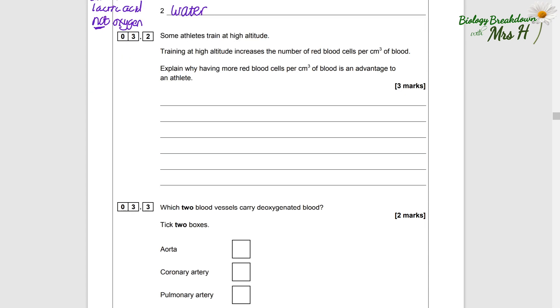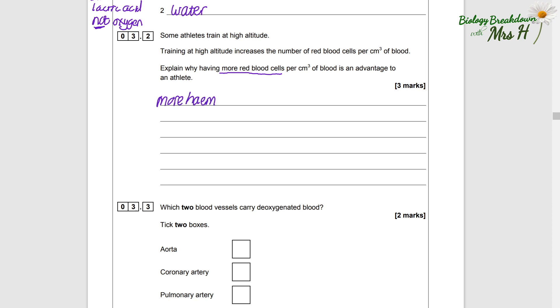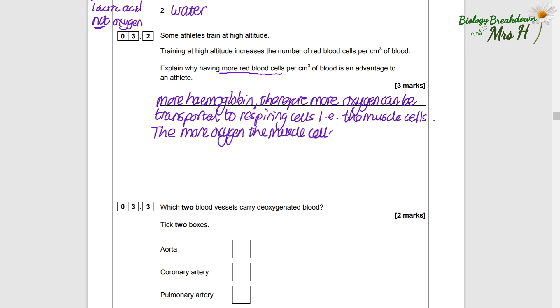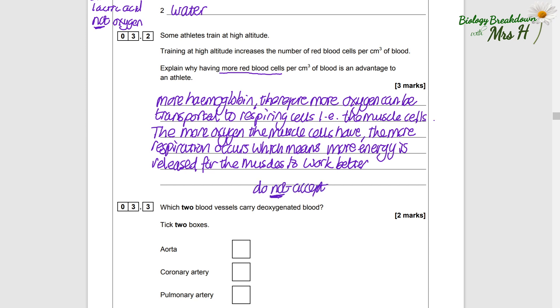Well, that will mean there's more hemoglobin, therefore more oxygen can be transported to respiring cells, for example muscle cells. The more oxygen the muscle cells have, the more respiration occurs, which means more energy is released for the muscle cells to work better. There are three marks, so the main points being marked here are more hemoglobin, more respiration, and more energy being released.